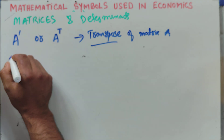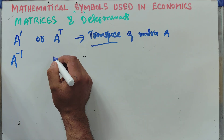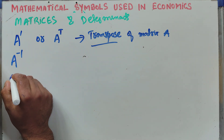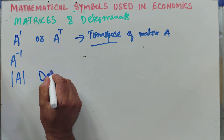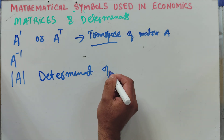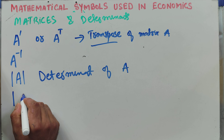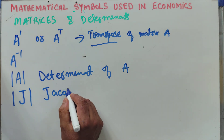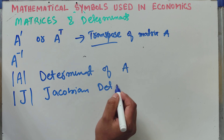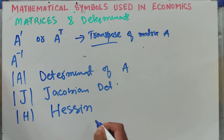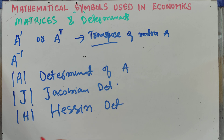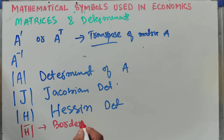Then we have A inverse, which is the inverse of matrix A. Next is the symbol for the determinant of matrix A. Then we have the Jacobian determinant, followed by the Hessian determinant — also simply called the plain Hessian determinant. We also have the symbol H-bar, which we call the bordered Hessian determinant.